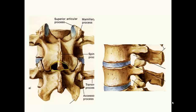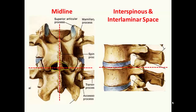The key landmarks to identify in a midline approach are the neuraxial midline and the interspinous and interlaminar spaces. The intersection point of the location of these two landmarks marks an appropriate insertion point for a spinal or epidural needle.